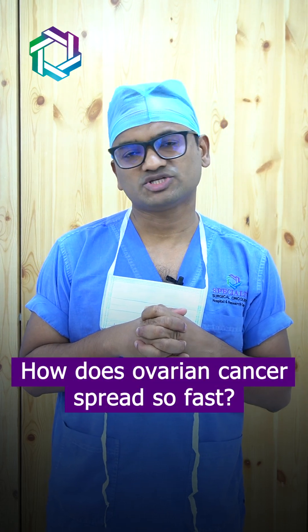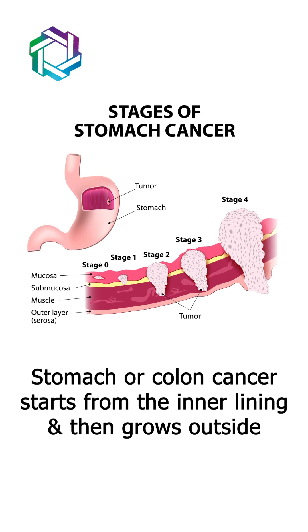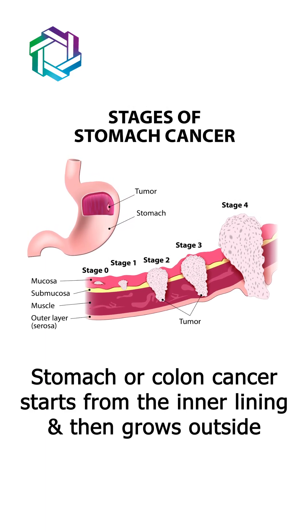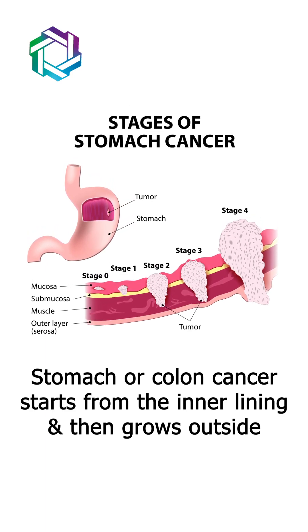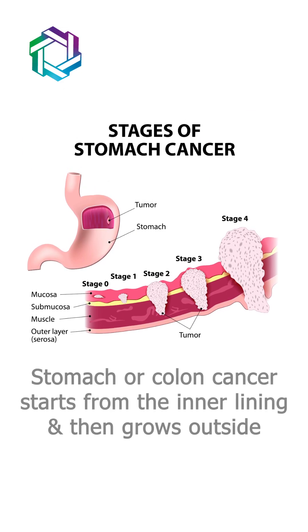How does ovarian cancer spread so fast? If you compare ovarian cancer with other cancers in the abdominal organs, it is quite different. A stomach cancer or a colonic cancer starts in the innermost lining — that is the mucosa of the organ — and then slowly penetrates and reaches the outer surface.